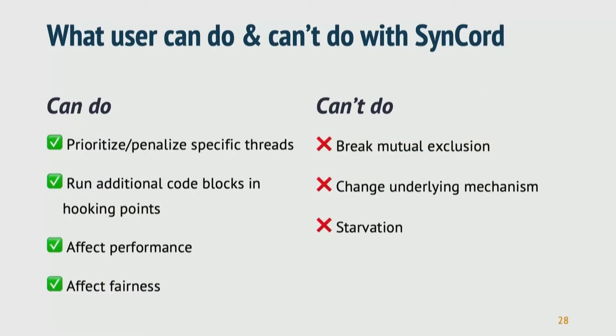Therefore, with Synchrod, users can prioritize or penalize specific threads with a reordering policy. Users can also run additional code blocks at predefined hooking points to get semantics or profiling data. With this, users can affect performance and fairness. However, since the underlying mechanism remains intact, users can never break mutual exclusion.